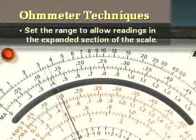Finally, measurements should always be made on a range that allows pointer indication in the more expanded section of the scale. Measurements made on the compressed side of the scale are less accurate.